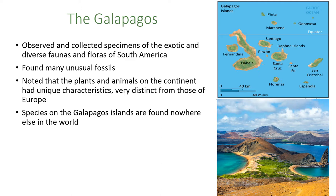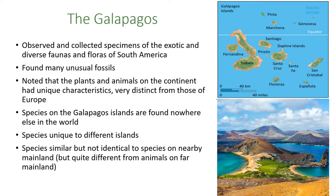He found species you can't find anywhere else in the world. On the Galapagos Islands, each island had unique species to itself — different types of birds on different islands that, while similar, were distinct to different groups. He found that the species on the islands were also similar to those on the mainland of Ecuador, but not quite the same — showing that some change had occurred.